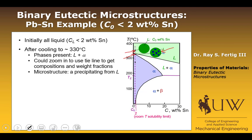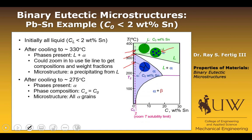Moving into the pure alpha region, we expect to see all alpha grains, which is what we observe. The phase present is only alpha, the phase composition C alpha equals C0, and the microstructure is all alpha grains. Very simple — this didn't require any significant calculations.